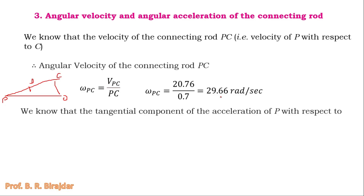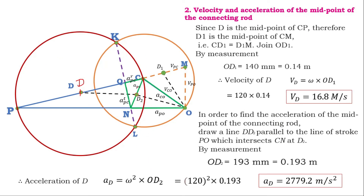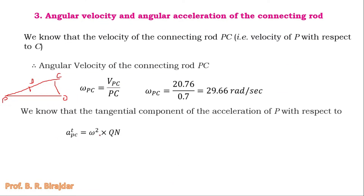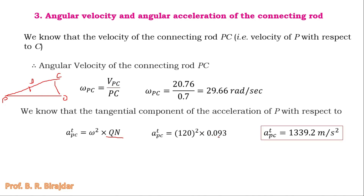To find angular acceleration, we need the tangential acceleration. Tangential acceleration of P with respect to C equals omega squared multiplied by Q to N distance: 120² × 0.093 = 1339.2 meter per second squared. This is the tangential acceleration component from the acceleration diagram.